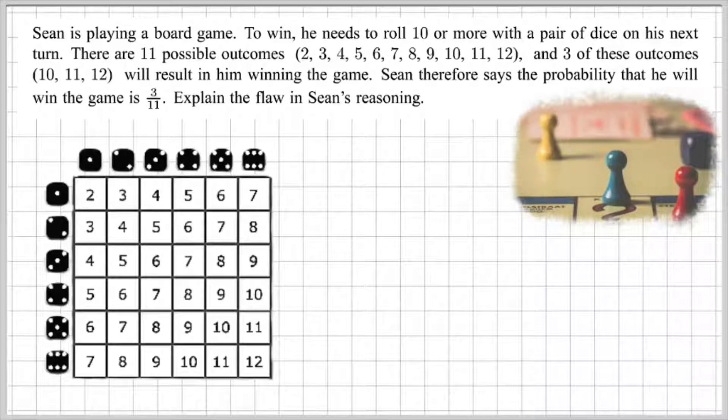So the best way to solve this question is to do a sample space. Now, I've got a grid with die one and die two and I have outcomes one to six on die one and outcomes one to six on die two. And if I roll them both together, then these are the possible outcomes I can get. Now, in total, there are 36 possible outcomes.